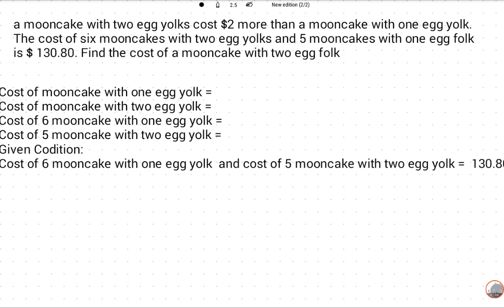Cost of mooncake with one egg yolk is X dollars. So cost of mooncake with two egg yolks is $2 more, which will be X + 2 dollars, right?